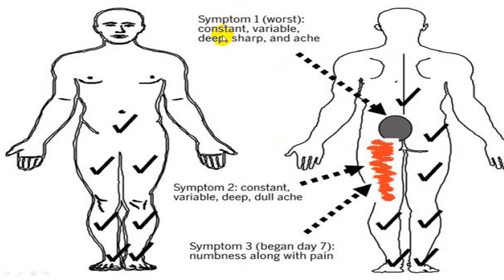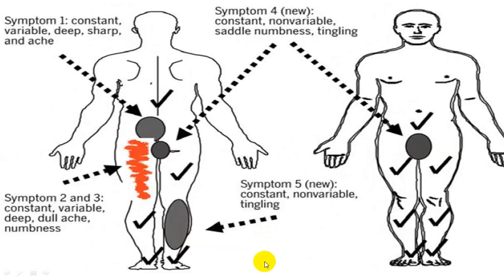There are a few symptoms which are very peculiar in these groups. First, deep sharp pain which is constant and variable. Second, constant, variable, deep and dull aching pain. Third, numbness along with pain. Fourth, constant, non-variable, saddle numbness and tingling. Fifth, constant, non-variable, and tingling in the lower limb. So these are the different types of presentation in those groups.